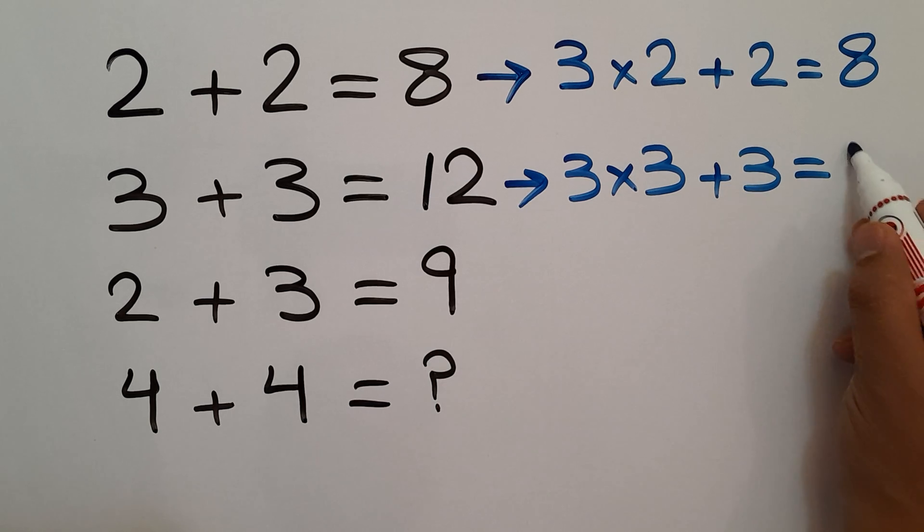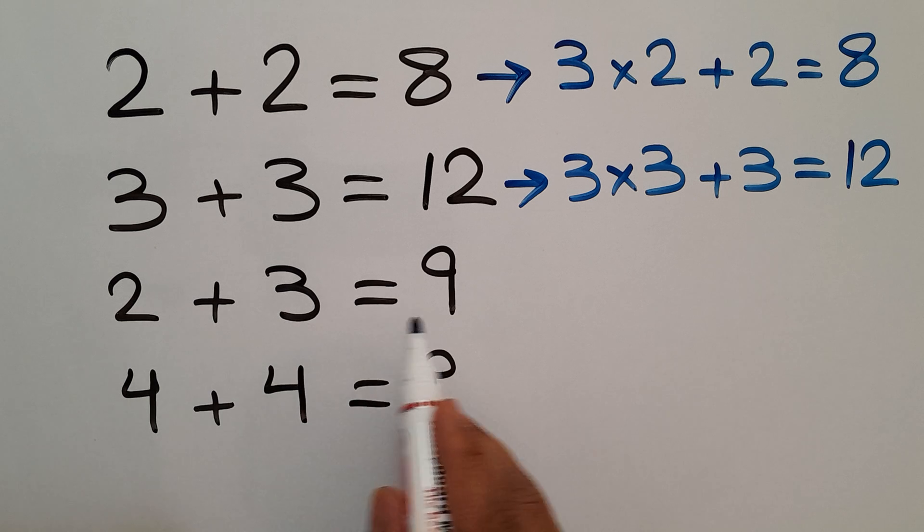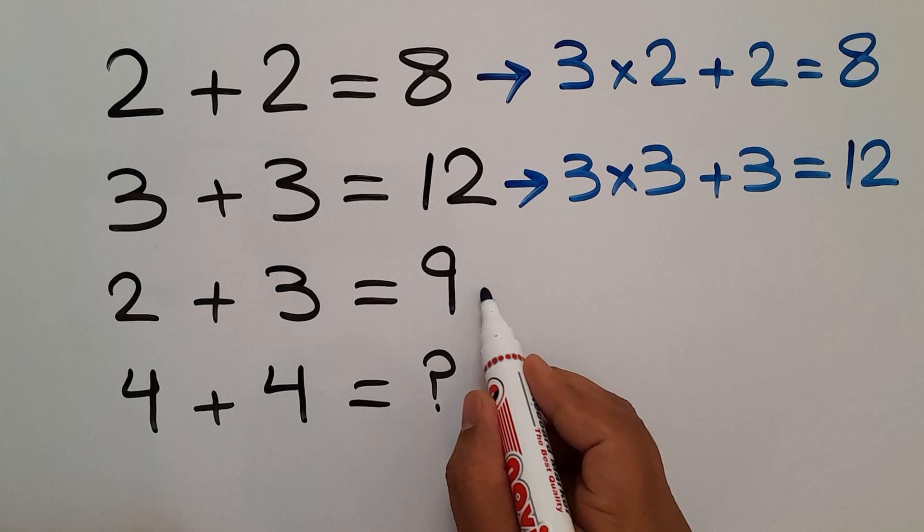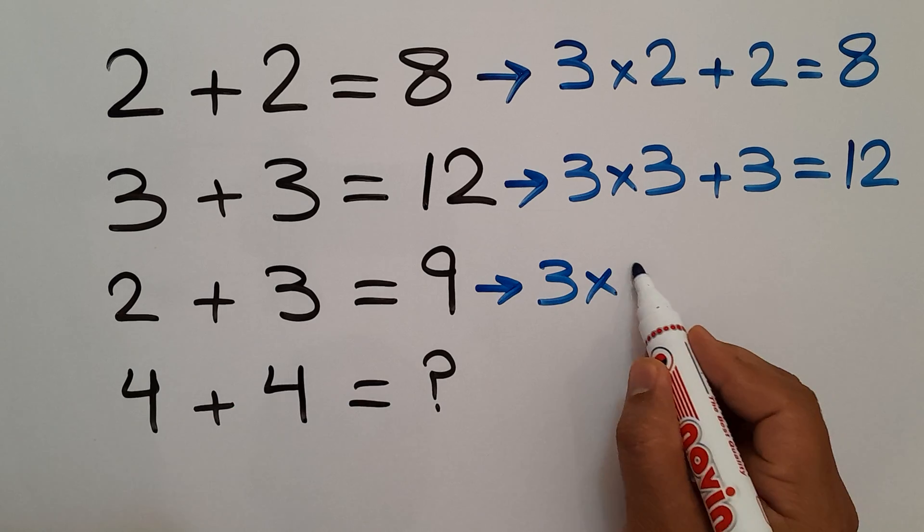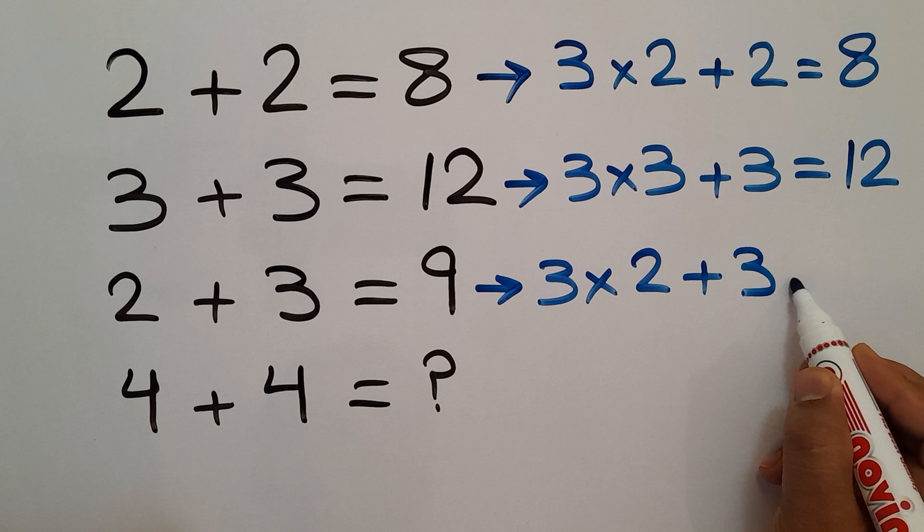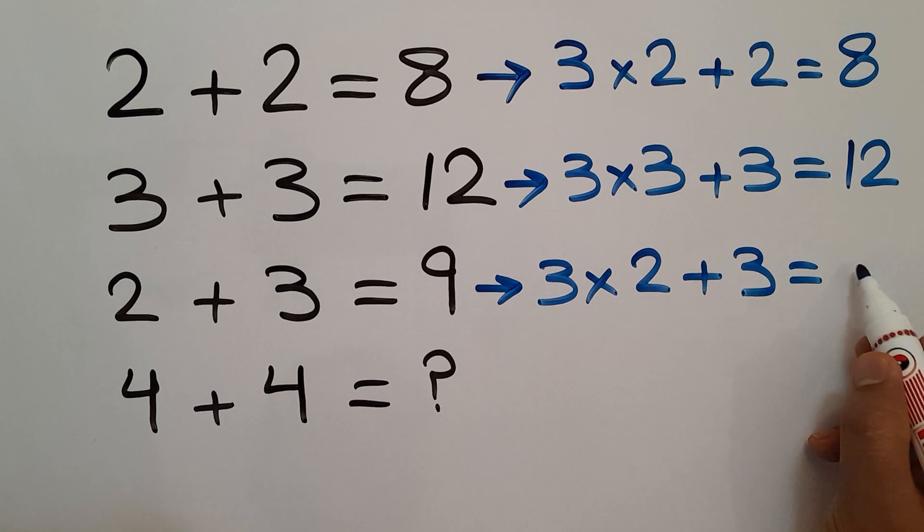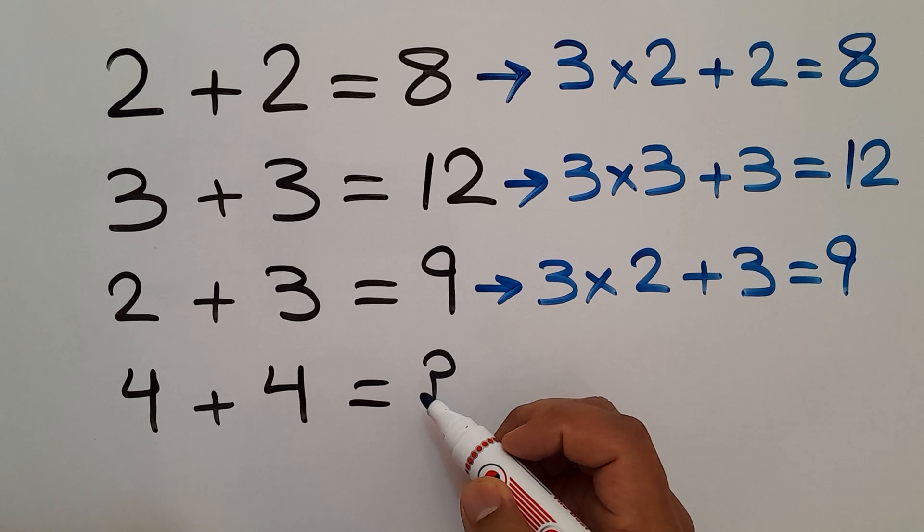In the third line we have 2, 3, and 9. 3 times 2 plus 3 will be equal to 6 plus 3, which equals 9, the right hand side number.